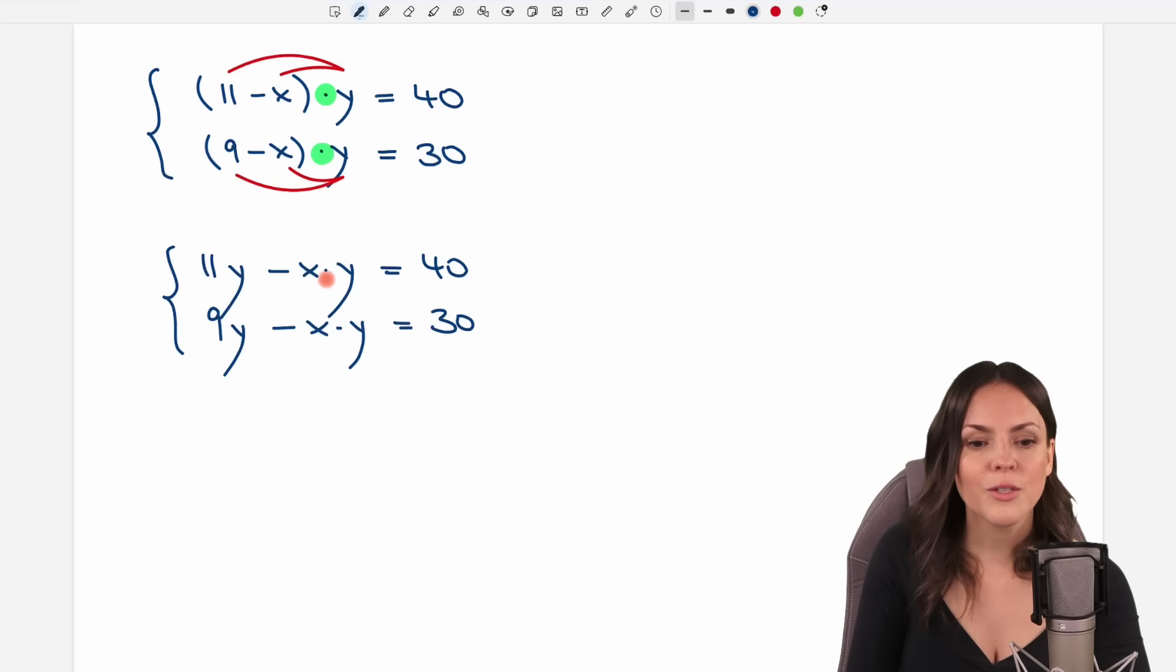Because we have xy in here and xy in here, we can get rid of it by either adding both equations or subtracting them. Let's try and subtract them. What happens? We have minus xy minus minus xy. So the minus minus gives us a plus. So we have minus xy plus xy and it will cancel out.